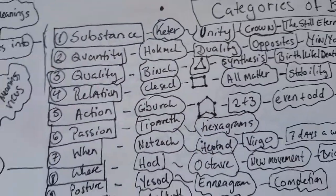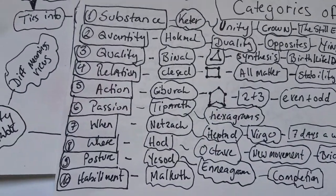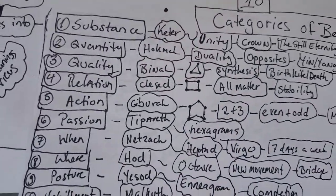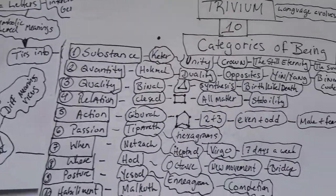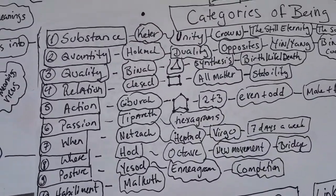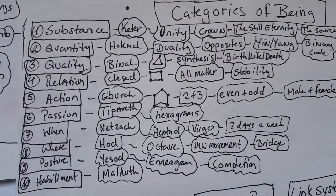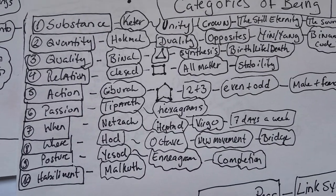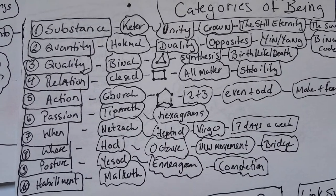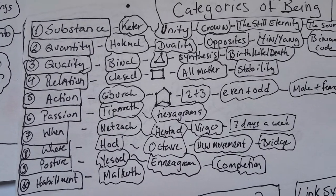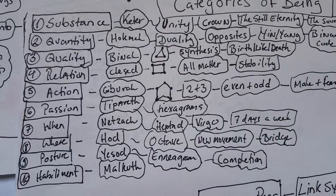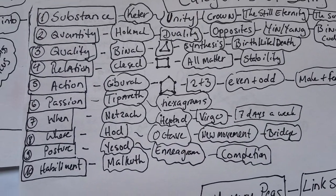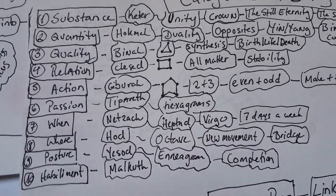There are 10 basic concepts to the Trivium. You can count them on both hands: substance, quantity, quality, relation, action, passion, when, where, posture, habiliment.